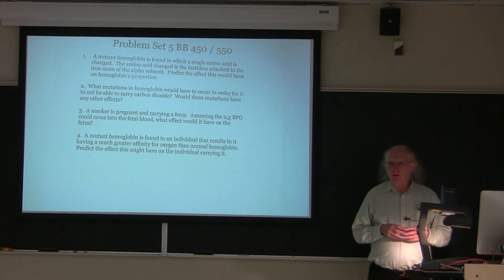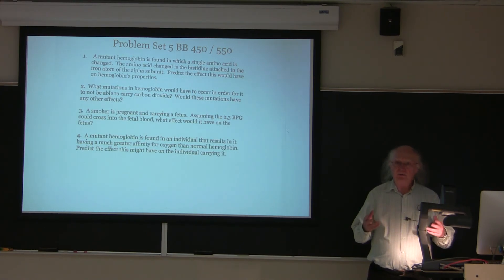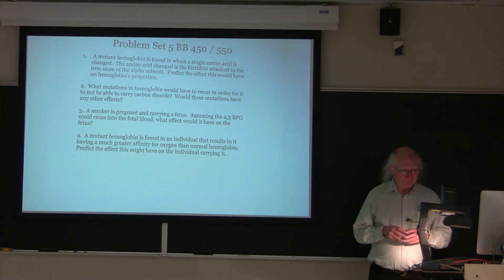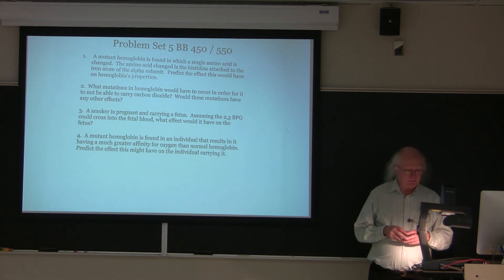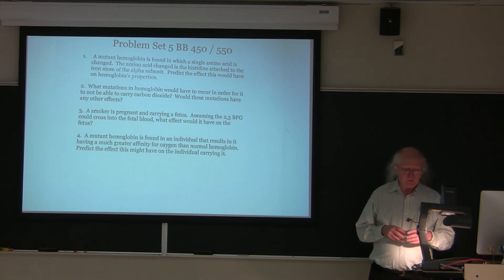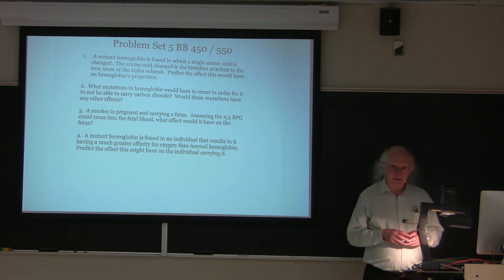This is problem set number five for Biochemistry Free for All, part of the BB450 class taught by Kevin Ahern at Oregon State University. This problem set relates to hemoglobin. Problem number one says that a mutant hemoglobin is found in which a single amino acid is changed — the histidine attached to the iron atom of the alpha subunit. Predict the effect this would have on hemoglobin's properties.